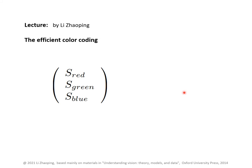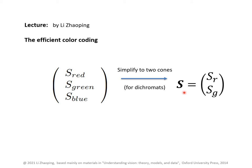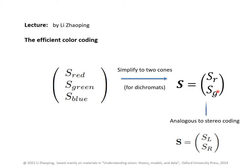We could simplify further by looking at only two cone types — red and green — using the notation sr and sg for the two cones. Some color-deficient human individuals have only two cone types, and they are called dichromatic rather than trichromatic. With the signal as two-dimensional, we can use our intuition from stereo coding where inputs are also two-dimensional — from the left eye and right eye. So the inputs from the red and green cones are analogous to inputs from the left and right eyes.